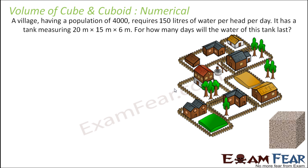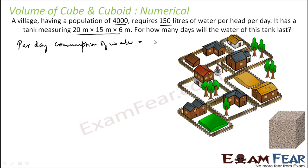A village having a population of 4,000 requires 150 liters of water per head per day. How many days will the water in the tank last? If it has a population of 4,000 and requires 150 liters of water per day, the per day consumption of water is number of people into 150 liters. That comes out to be 600,000 liters — that is the consumption per day.